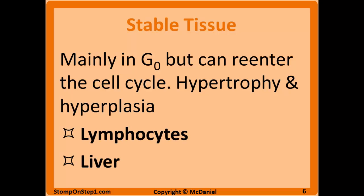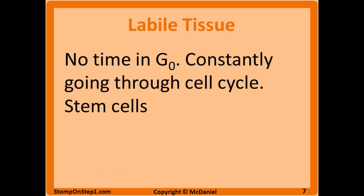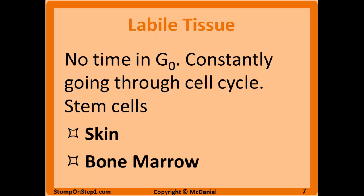An example of stable tissue is a lymphocyte. Lymphocytes divide whenever they are needed, as in an infection. Hepatocytes, or liver cells, also divide when they are needed — after binge drinking or in an active hepatitis infection. Labile cells are your ADHD cells — they are constantly dividing and going through the cell cycle, and they are always busy. Some examples include stem cells, skin, and bone marrow.